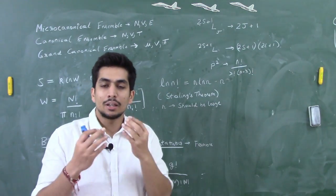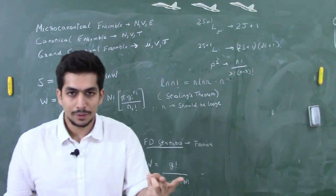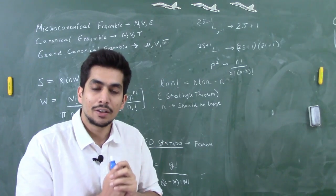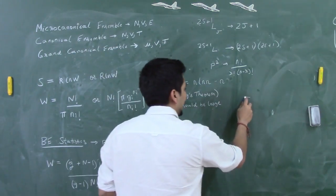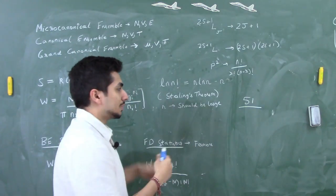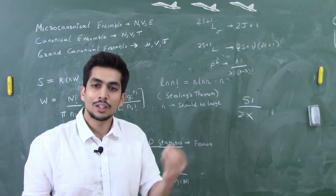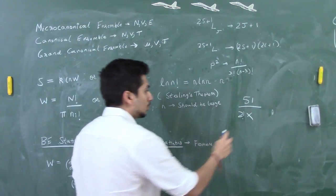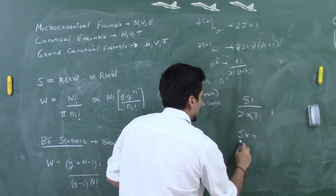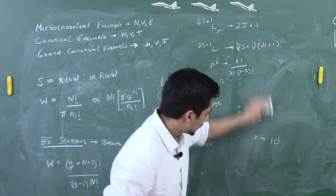A question from CSIR-NET: five electrons are to be arranged with three upspin and two downspin. Treating upspin and downspin as two energy levels, the formula gives 5! / (2! × 3!). This equals (5 × 4 × 3!) / (3! × 2) = 10. So the answer is 10 microstates.